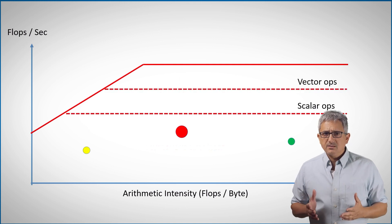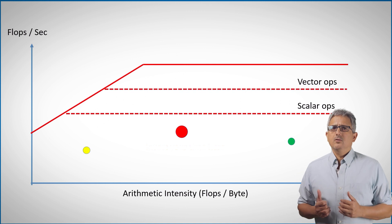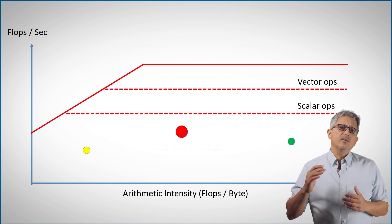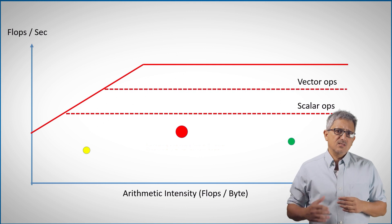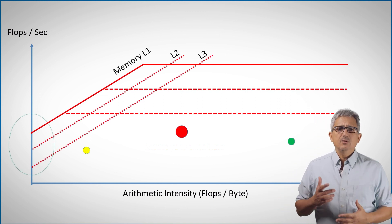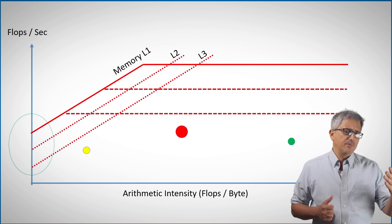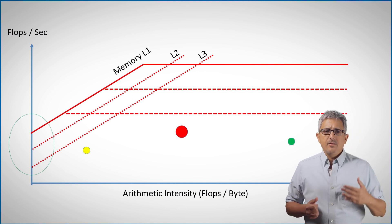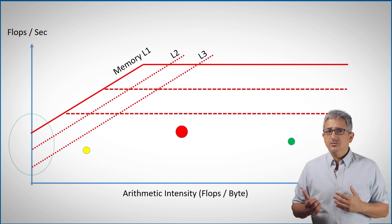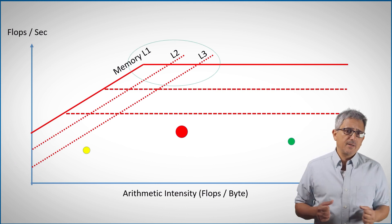The truth is that the representation of the hardware is a little bit more complex. As you can see here, there is a different roofline for vector operations and for scalar ones, and also each of the memory hierarchies imposes a different limitation. For example, the level 1 cache is faster than level 2, but level 2 has a bigger capacity.